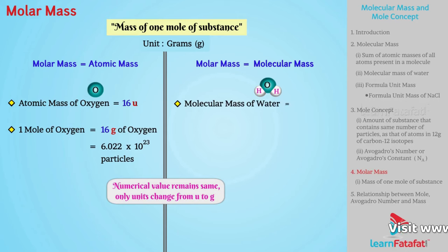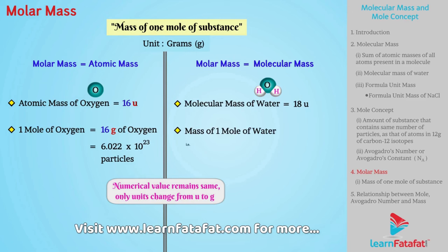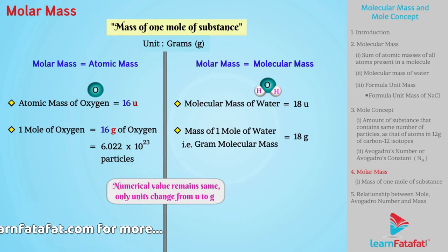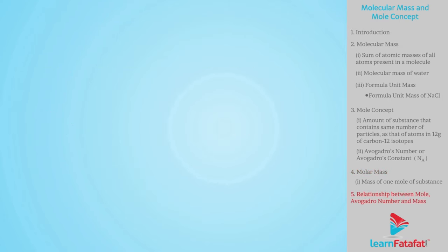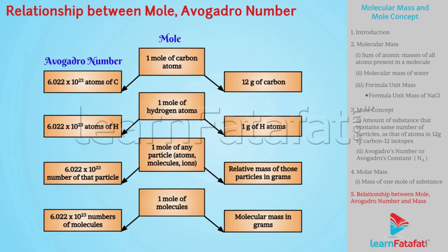Molecular mass of water is 18 atomic mass unit. So, mass of 1 mole of water i.e., gram molecular mass is 18 grams which contains 6.022 into 10 raise to 23 particles. Here is a brief description of relationship between mole, Avogadro number and mass.